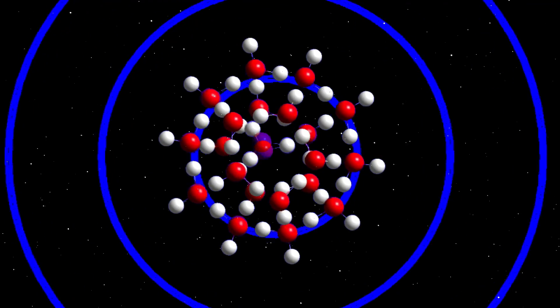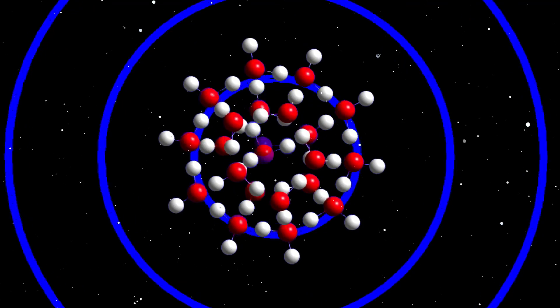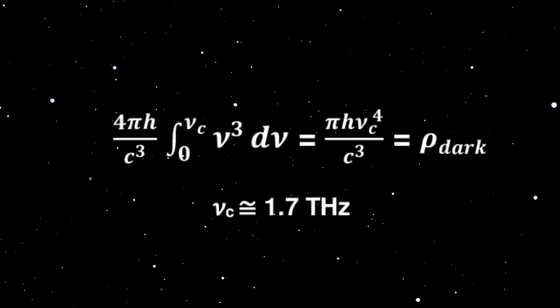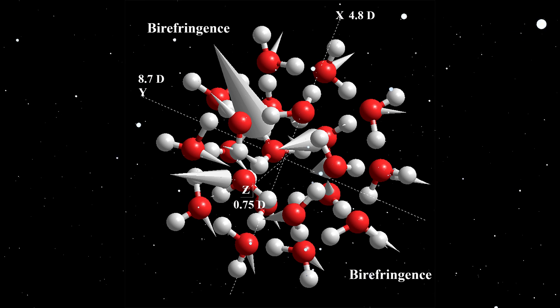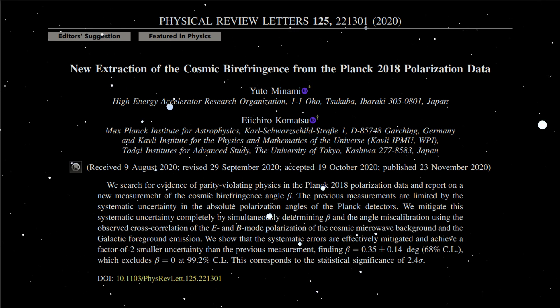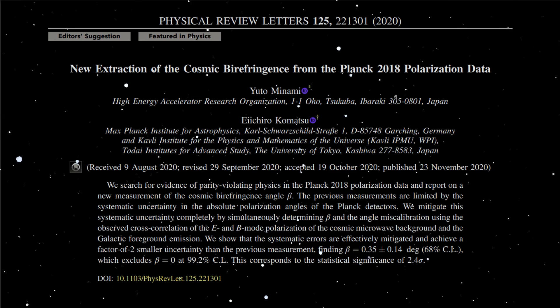This is the terahertz radiative mode of an ejected pentagonal dodecahedral water nanocluster, equal in frequency to the 1.7 terahertz value in the formula that agrees with the presently observed dark energy density. The indicated anisotropic dipole moments along the nanocluster axis are precursors to water nanocluster birefringence, analogous to the terahertz-induced birefringence of liquid water. Observational evidence for birefringence of the cosmic microwave background has recently been reported.